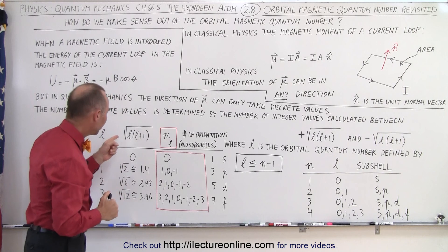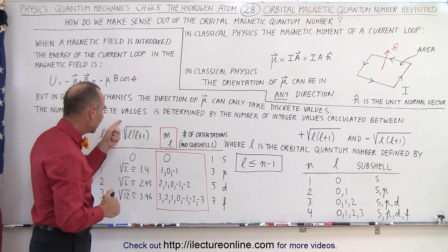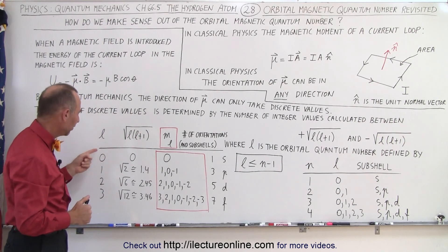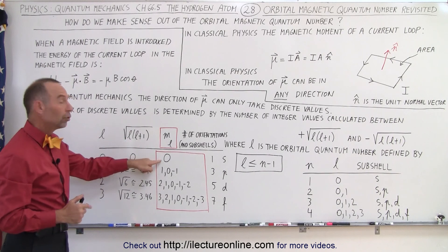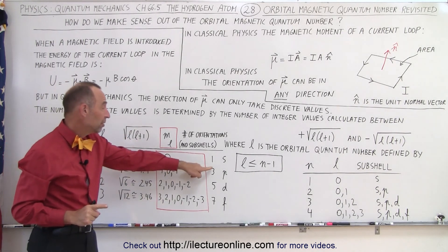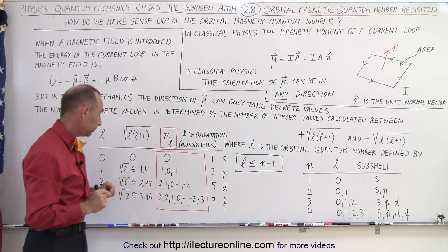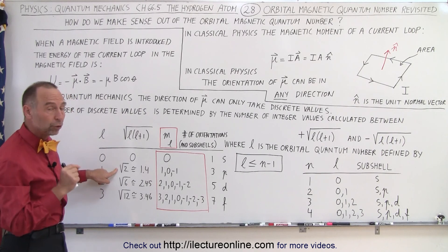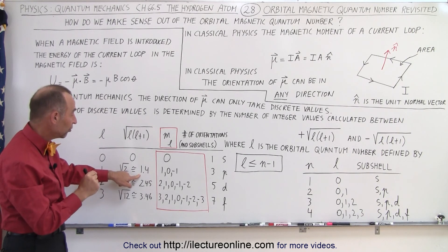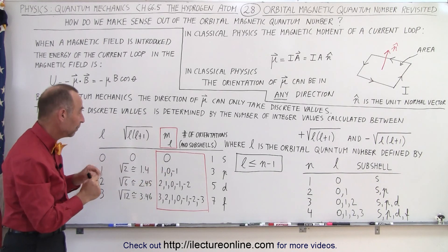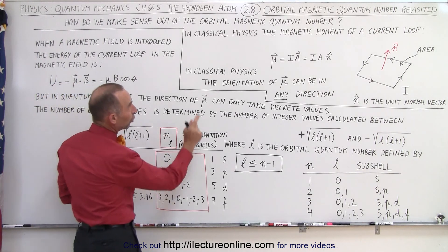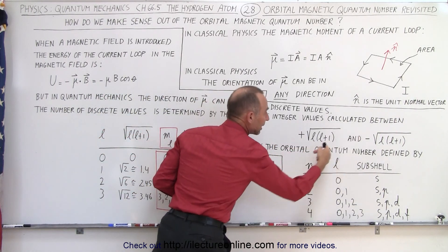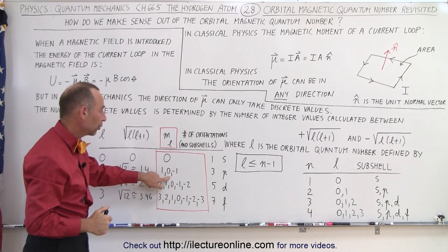Taking a look at the various values this quantity can be: if L equals 0, 1, 2, or 3 — when L equals 0, this quantity equals 0, which only leaves you with one integer, 0, meaning there is only one possible orientation. When L equals 1, the value is equal to the square root of 2, which means the possible integer values are plus 1, 0, and negative 1. M sub L — the orbital magnetic quantum number — will fall within these limits and be an integer value, so there will be three possible orientations, associated with the P subshells.